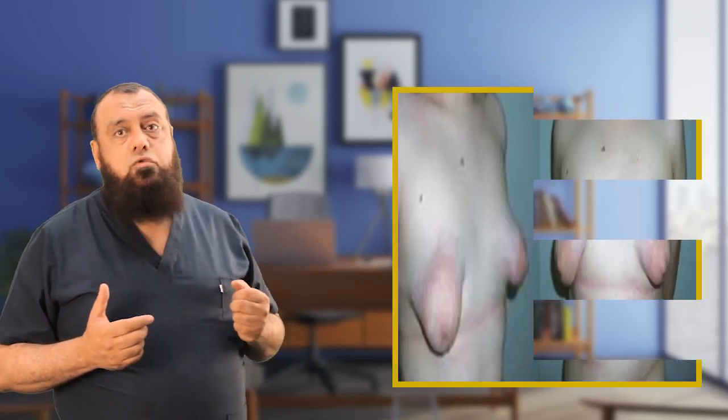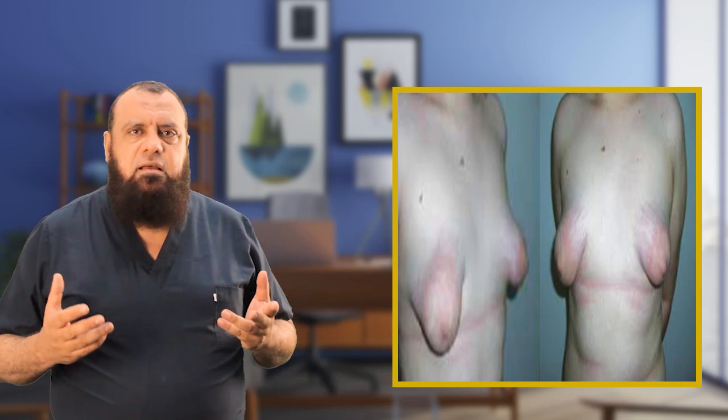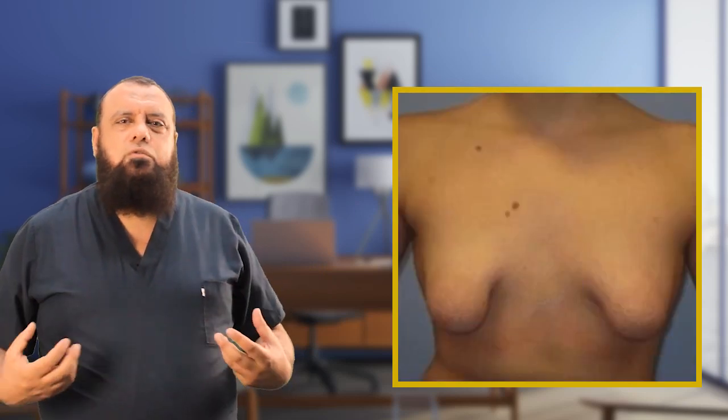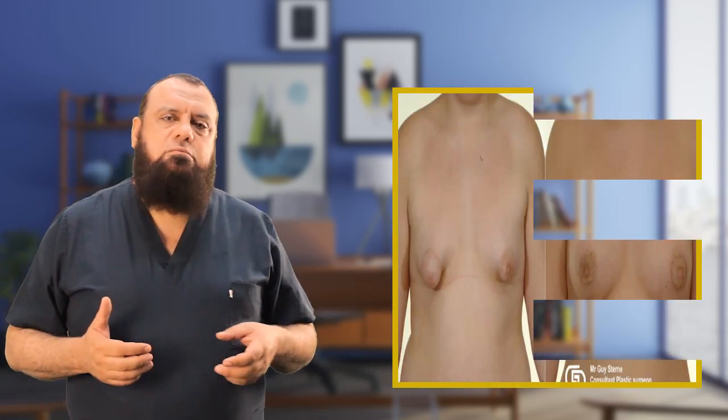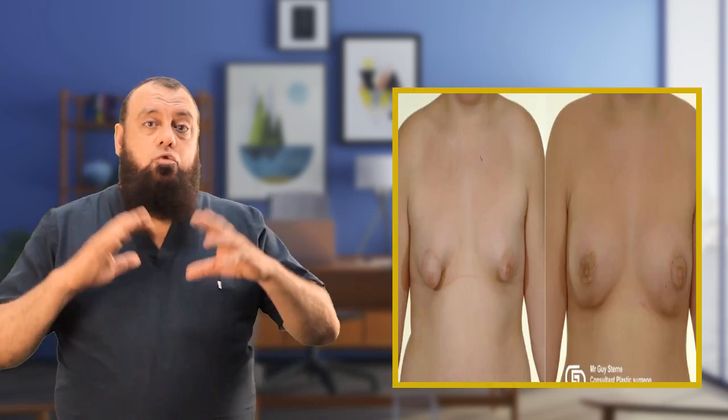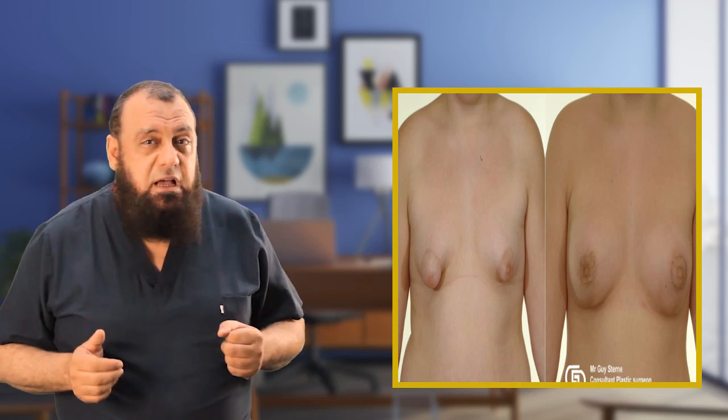The last anomaly is tuberous breast, where the breast looks like tubules or small tubes, also treated by augmentation mammoplasty. In summary, the breast anomalies are: amasia, polymasia, micromasia, gigantism or diffuse hypertrophy, and tuberous breast.